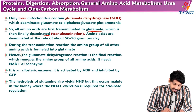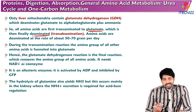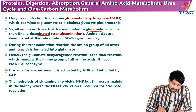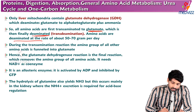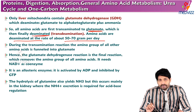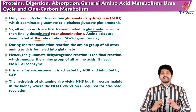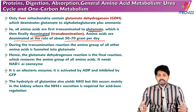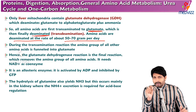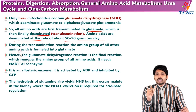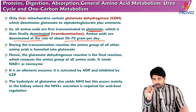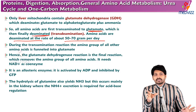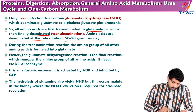In liver cells, amino acids are deaminated at a rate of about 50 to 70 grams per day. During transamination reactions, the amino group of all other amino acids is funneled into glutamate. The main transporters of ammonia are the amino acids glutamate and glutamine, which represent a non-toxic form of ammonia transport.